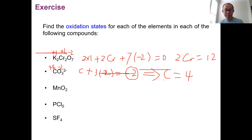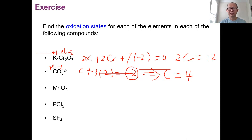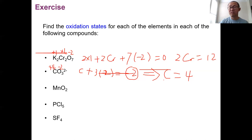Mark the oxidation number on top of each element — this is a good habit. We do all these things — assigning oxidation numbers — to help us study redox reactions. Assigning numbers on top of the element will help you when you're actually working on redox reactions. Put down the oxidation number on top of each element after you know them, because later on we'll need that number, especially the changes in those numbers to identify redox reactions.